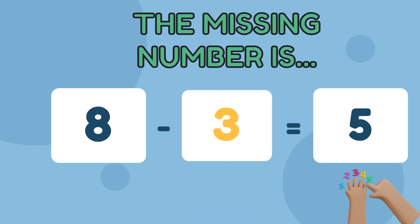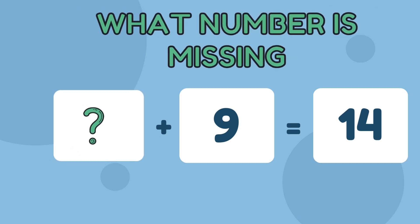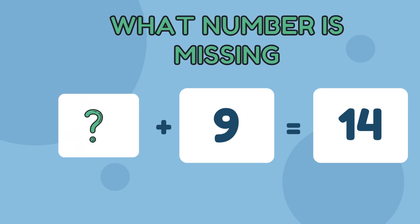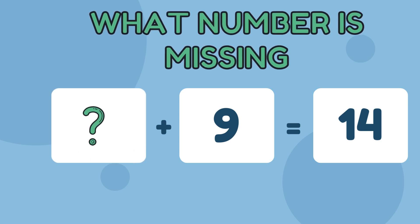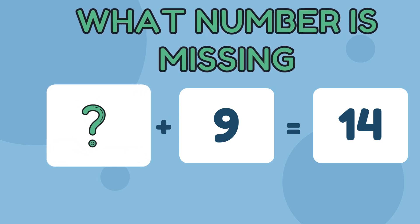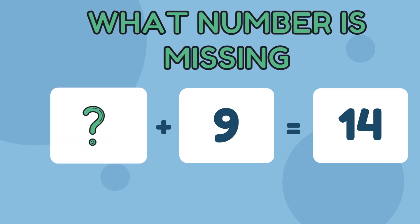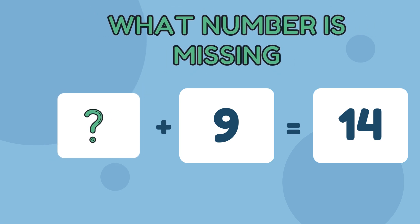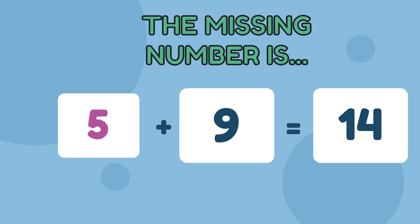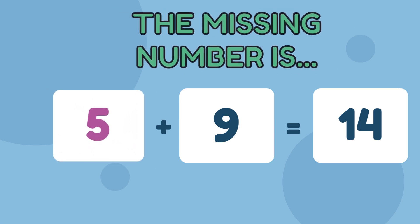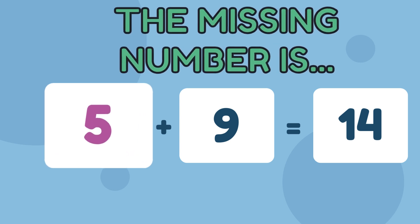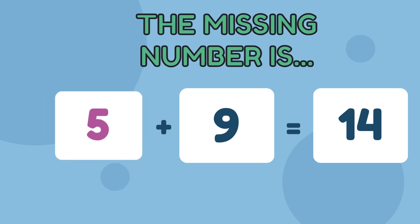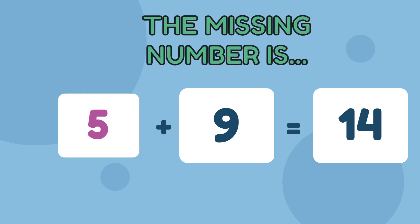On to question 3. What's the missing number in the question below? Correct. The missing number is 9. 5 plus 9 is equal to 14. You're doing great.